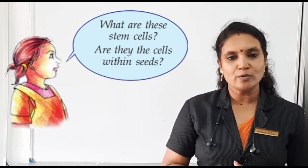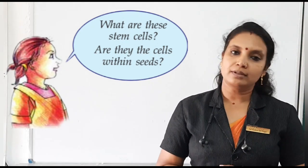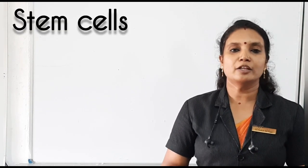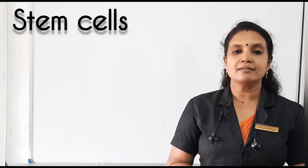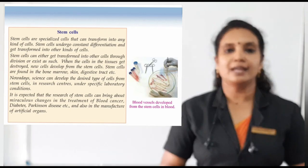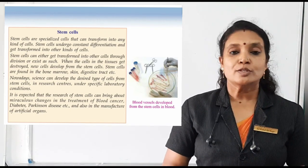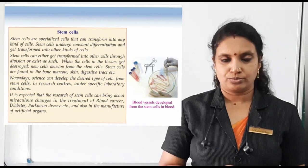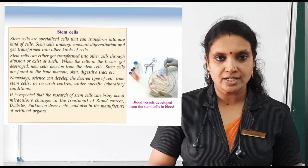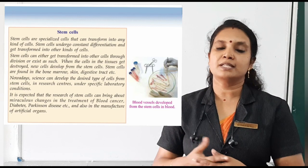What do you think about it? Have you heard about stem cells? Stem cells are a special kind of cells which can develop into any kind of cell. That means a stem cell can undergo cell differentiation and can change into any type of cell. So, when the cells in a tissue are destroyed, a stem cell can undergo cell differentiation and change into that particular cell.